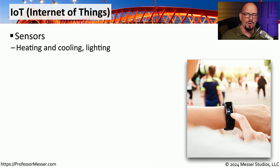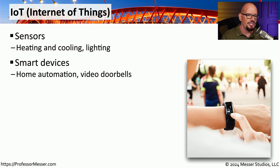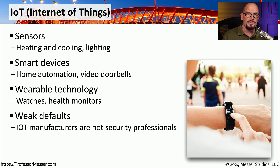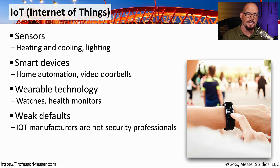Our industry is dealing with a large number of new devices connecting to the network — IoT devices, or Internet of Things. These can be sensors such as cooling and heating sensors, lighting connected to the network, or smart devices such as home automation devices, video doorbells, cameras, and other home-based devices. This could also be a wearable device such as a smartwatch or health monitor. The problem with IoT devices is that while they may be ingenious in their operation, they may not be well thought out from a security perspective. So segmenting IoT devices onto their own network and away from your data might be a good choice for IT security.